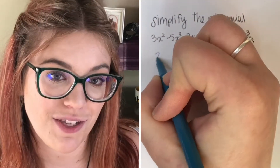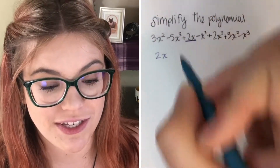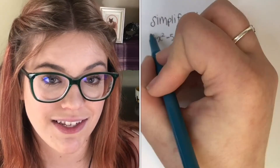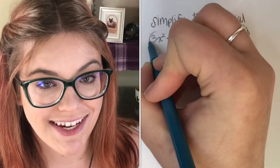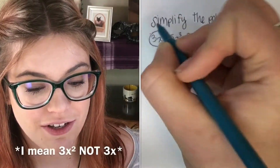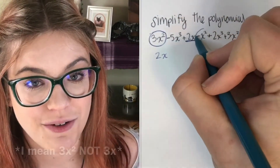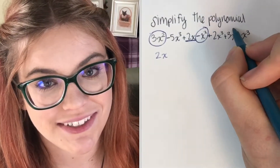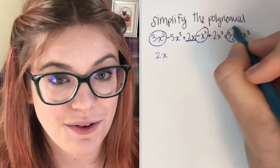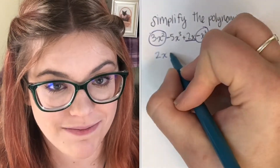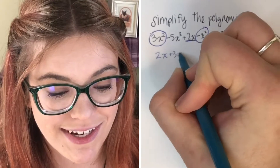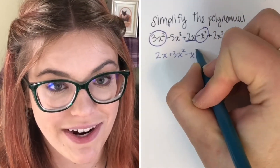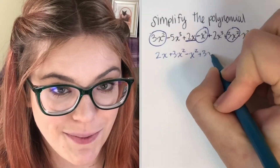The first thing I'm gonna do is start with the lowest order, which is 2x — it's the only term that has x by itself. Next we're gonna look at the x squared terms. So I'm gonna circle 3x squared, I'm gonna circle negative x squared, and I'm gonna circle 3x squared. Now I'm gonna write them all next to each other: 2x plus 3x squared minus x squared plus 3x squared.